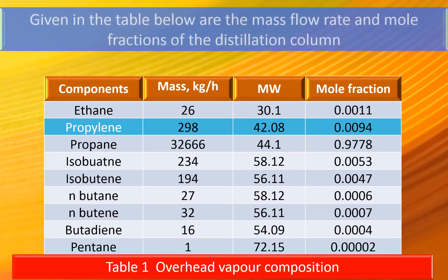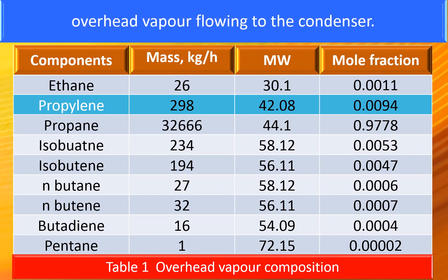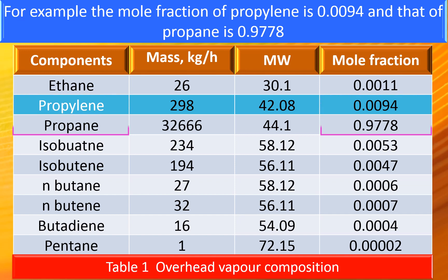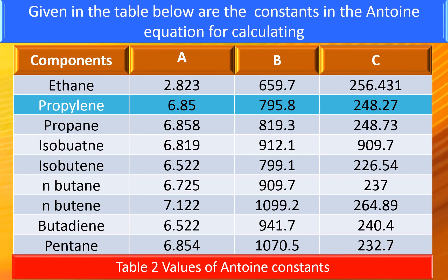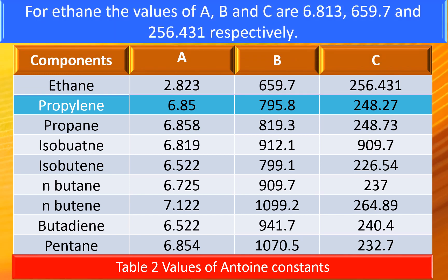Given in the table are the mass flow rates and mole fractions of the distillation column overhead. For example, the mole fraction of propylene is 0.0094 and that of propane is 0.9778. Also given are the constants in the Antoine equation for calculating the saturation pressure of the given mixture. For ethane, the values of A, B, and C are 6.813, 659.7, and 256.431 respectively.